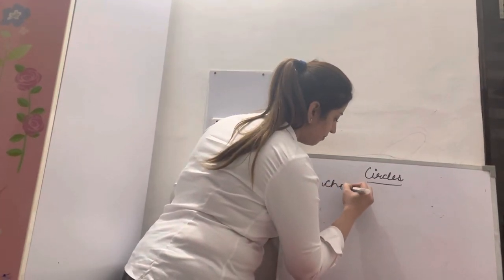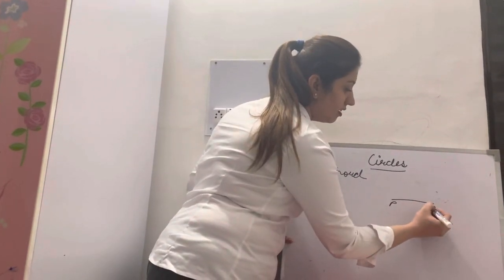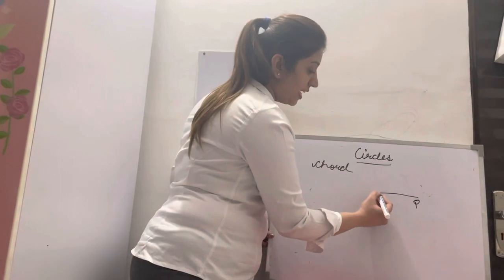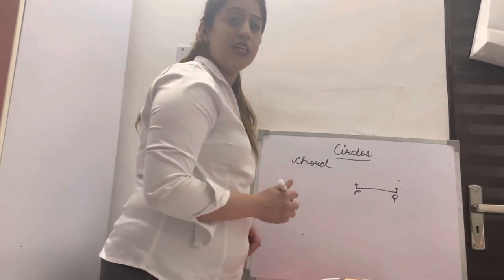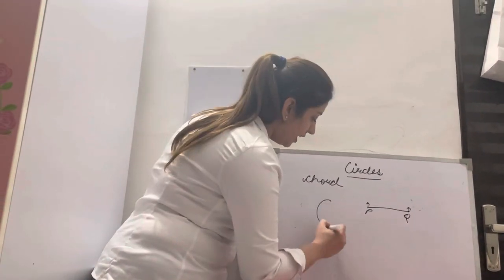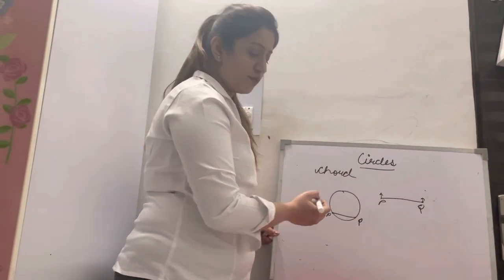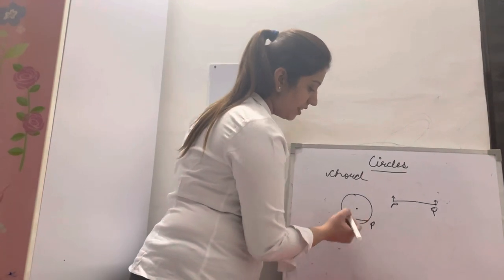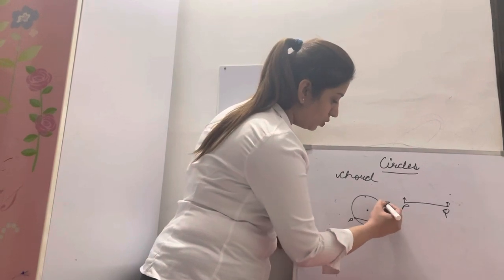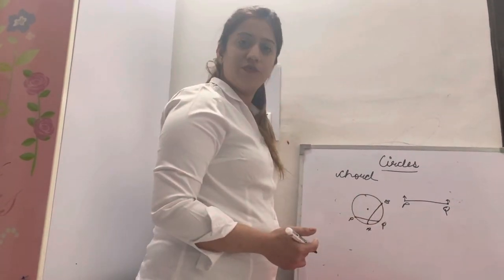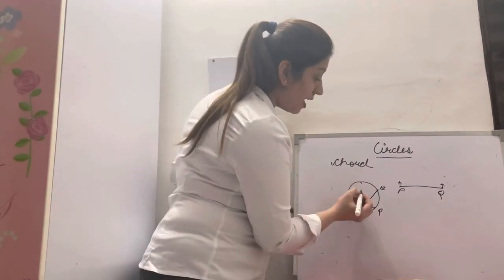Now comes the chord of a circle. A line segment — a line which has a starting and an ending point — is what we call a line segment. Any line segment that we draw inside a circle is what we call a chord of a circle. This is the center, and this is what we call a chord. Similarly, we can have various chords inside a circle.